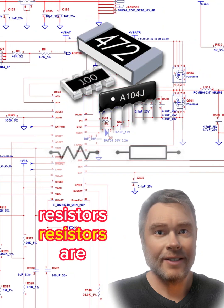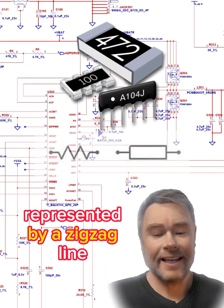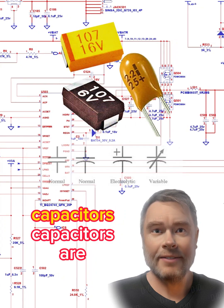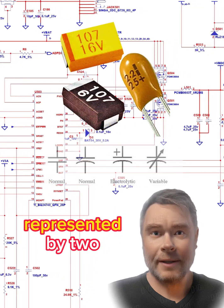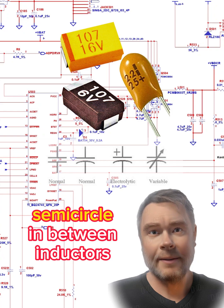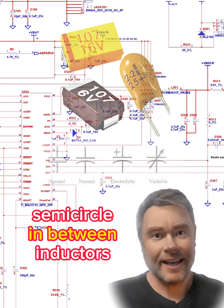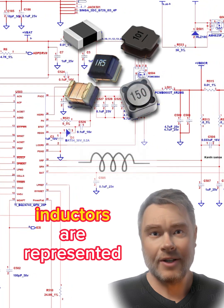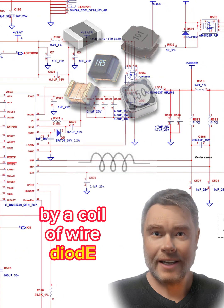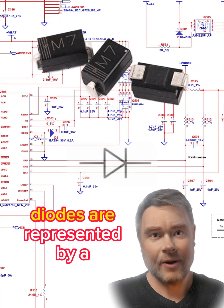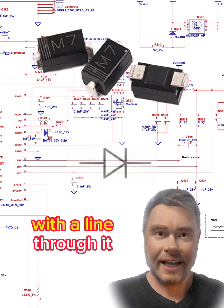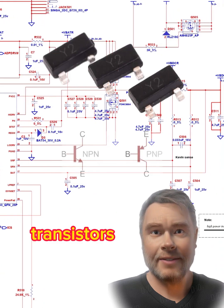Resistors are represented by a zigzag line. Capacitors are represented by two parallel lines with a semicircle in between. Inductors are represented by a coil of wire. Diodes are represented by a triangle with a line through it.